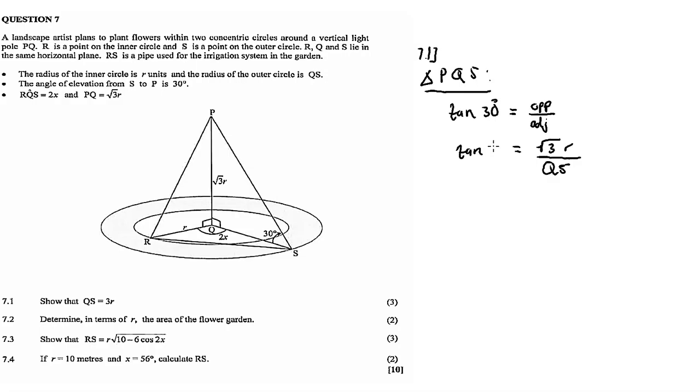Tan 30 degrees, so we simplify. One times square root 3r over tan 30 degrees equals QS. So QS is equal to square root 3r divided by tan 30 degrees. QS is equal to, what's tan 30 degrees?